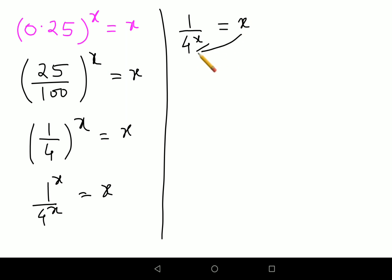Now shifting, we'll take the x on this side and 4 raised to x on this side. So we'll have 1 upon x equals to 4 raised to x.